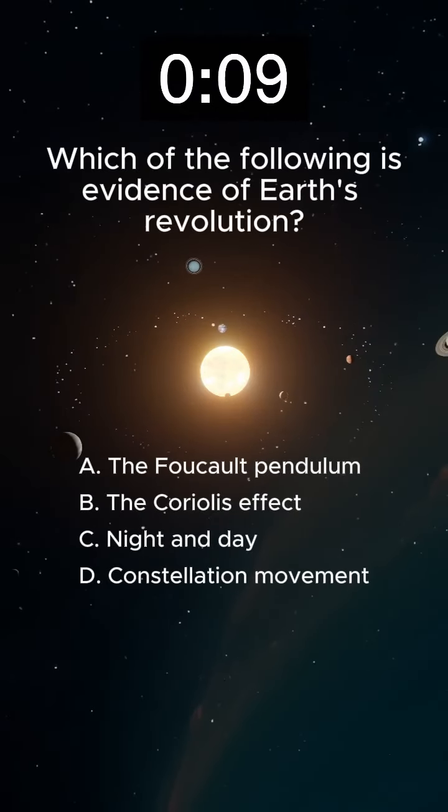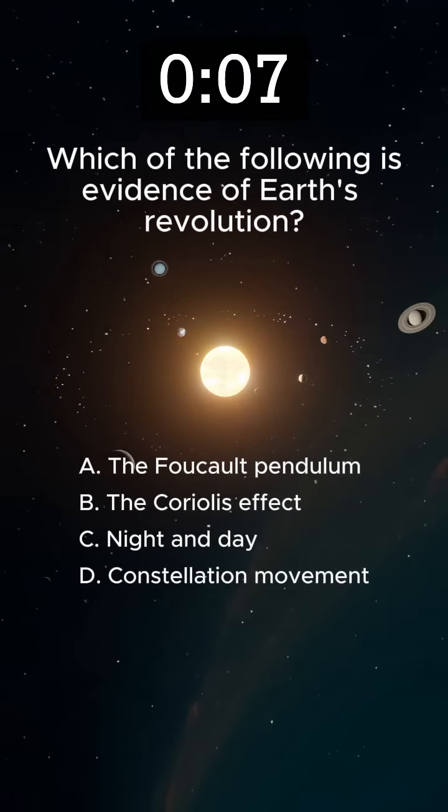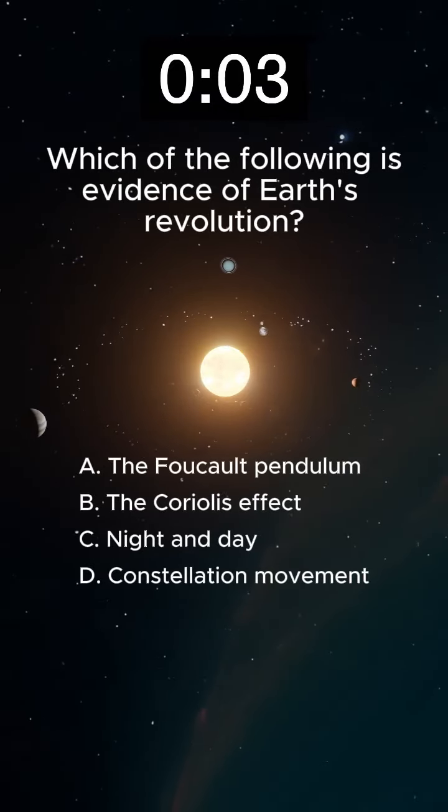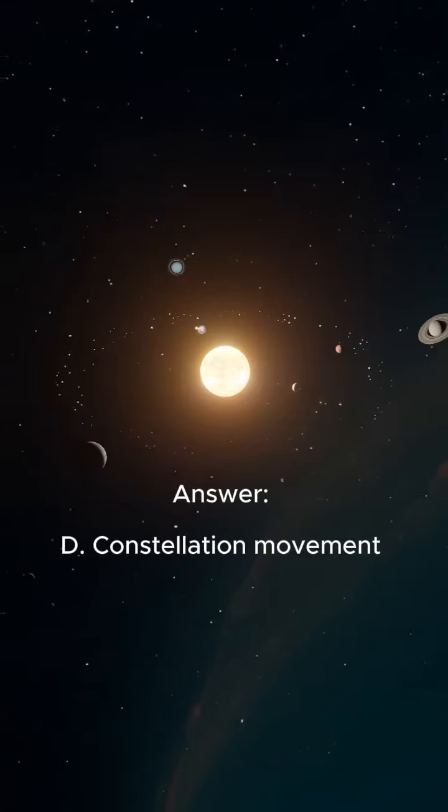Which of the following is evidence of Earth's revolution? Answer: D, constellation movement.